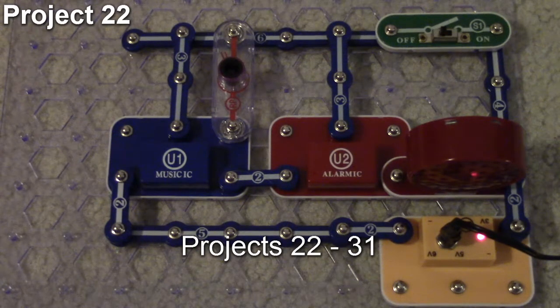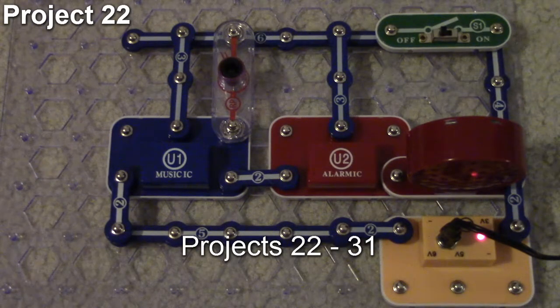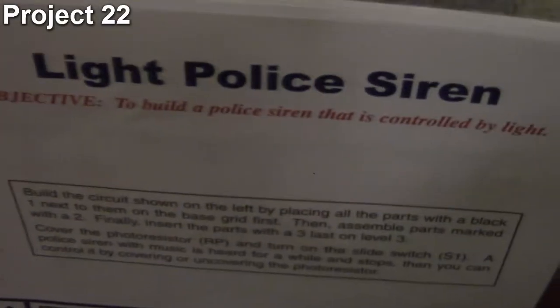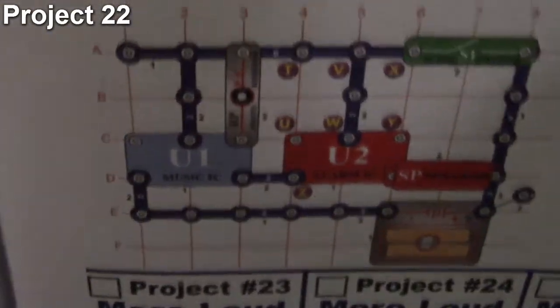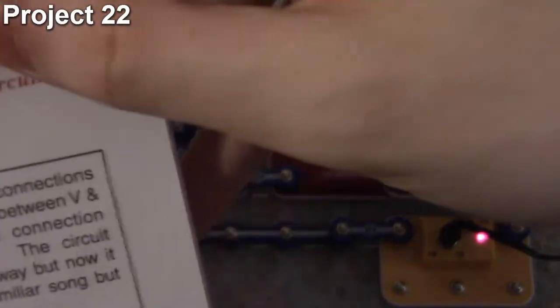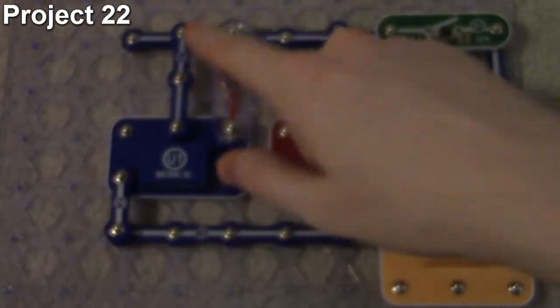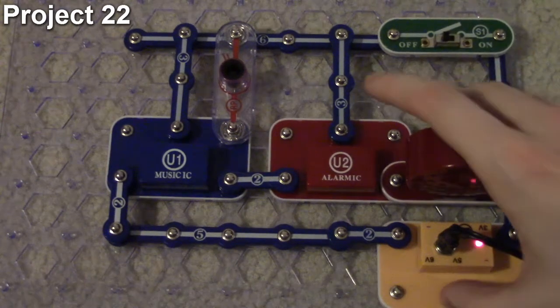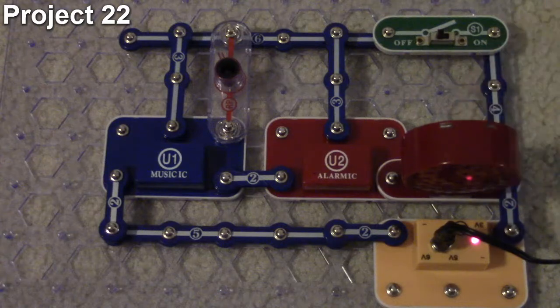In this video we're going to cover projects 22 through 31, starting with project number 22, the light police siren. The objective here is to build a police siren that's controlled by light using a photoresistor. We've got our music and alarm integrated circuits all hooked up to our speaker here.